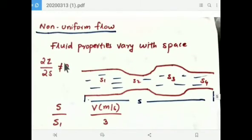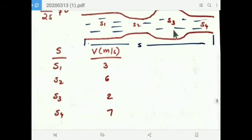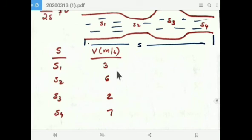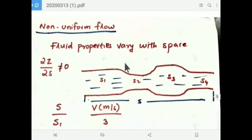Next: non-uniform flow. Fluid properties vary with space or position. This is a non-uniform circular pipe. At s1, velocity is 3 m/s; at s2, 6 m/s; at s3, 2 m/s; at s4, 7 m/s — just an example. You can see velocity varies with space. Not only velocity, all properties vary with space. This is called non-uniform flow. The mathematical representation is ∂z/∂s ≠ 0.